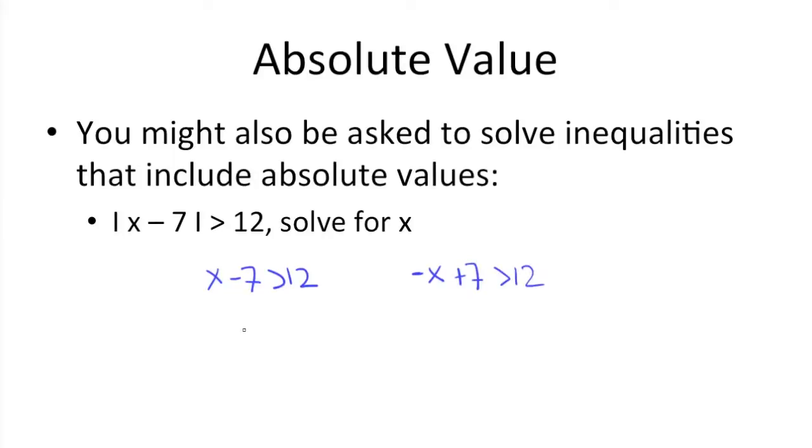Now solve the inequalities. We need to add 7 to both sides here, and we get x is greater than 19. Here, we need to subtract 7 from both sides, which gets us negative x is greater than 5. And if you recall from a previous video, we discussed how to solve for these inequalities when you're dividing or multiplying a negative on both sides. That means we need to flip the symbol in between, which means here we get x is less than negative 5.